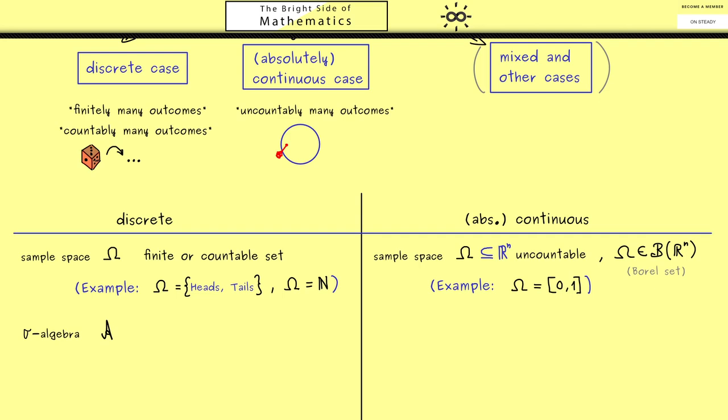In the next step, let's talk about the sigma algebras. In the discrete case, it's very simple: you can just take the whole power set of omega. Of course, depending on the problem, you could choose a smaller one, but there's no restriction for choosing the power set. Therefore, in the discrete case, we don't have to care about the sigma algebra at all. However, we really need the notion of a sigma algebra on the right-hand side in the continuous case. There, in general, it's not possible to choose the power set, but it's always possible to take the Borel sigma algebra.